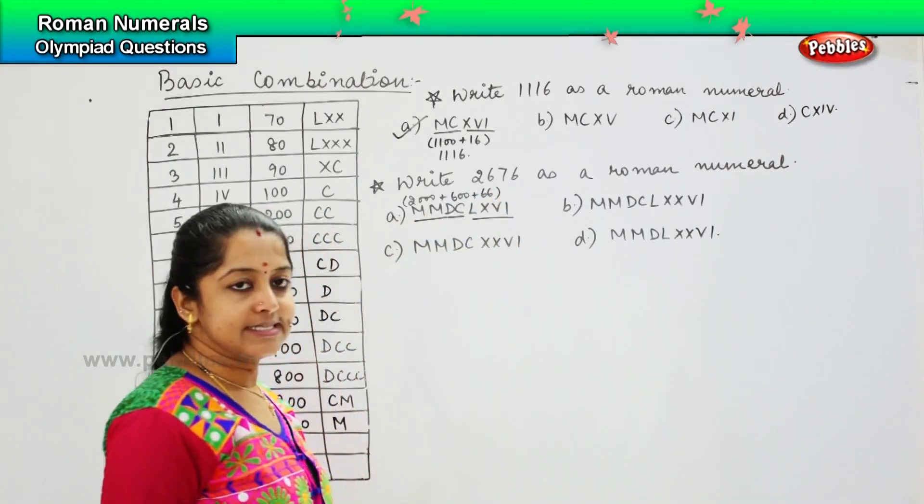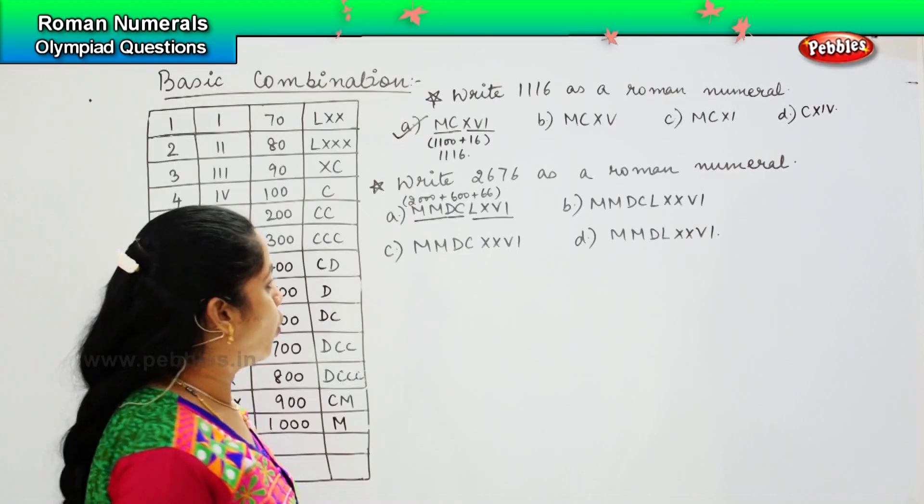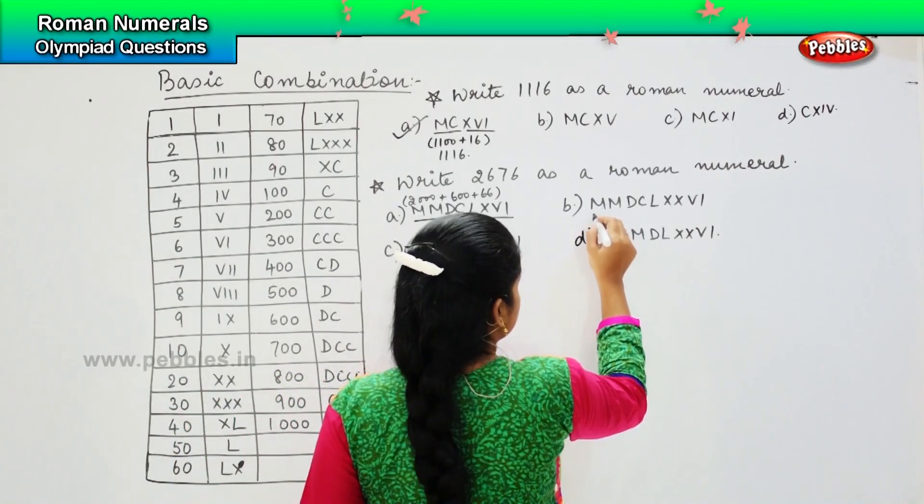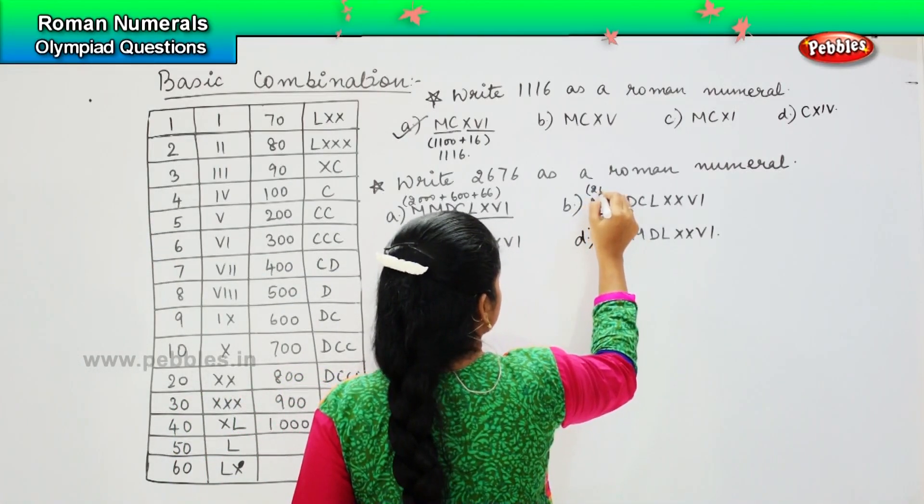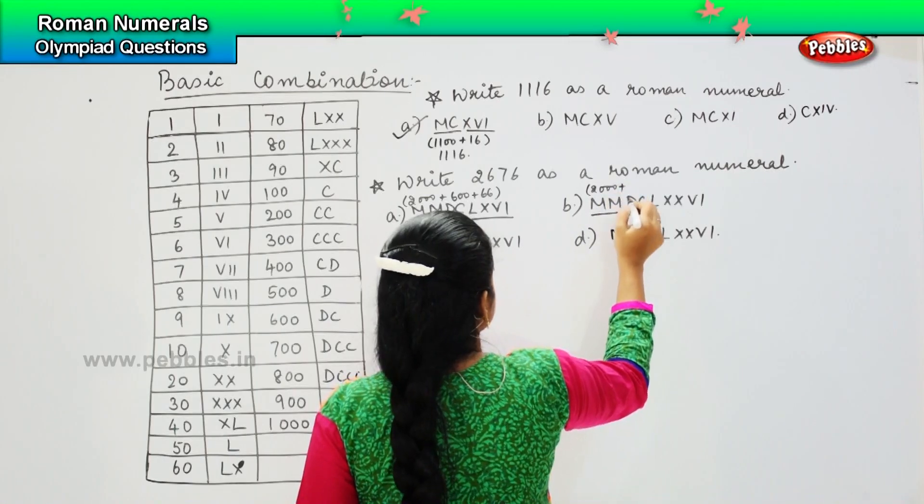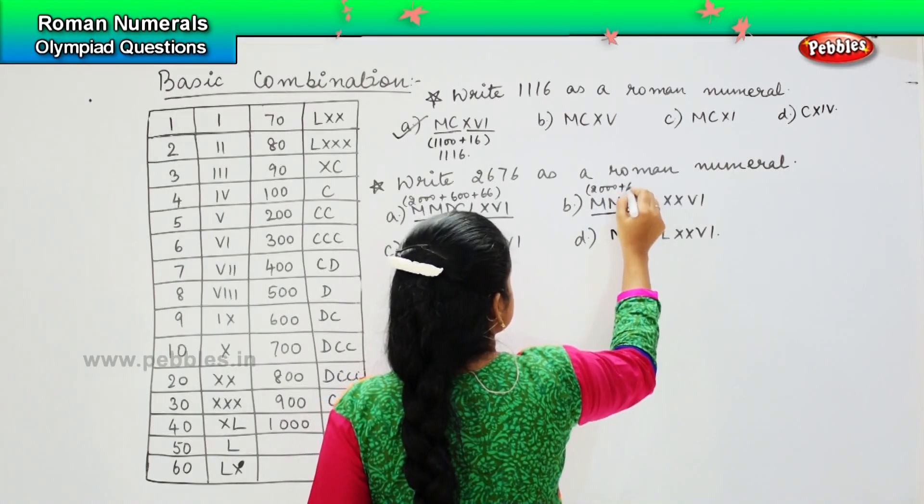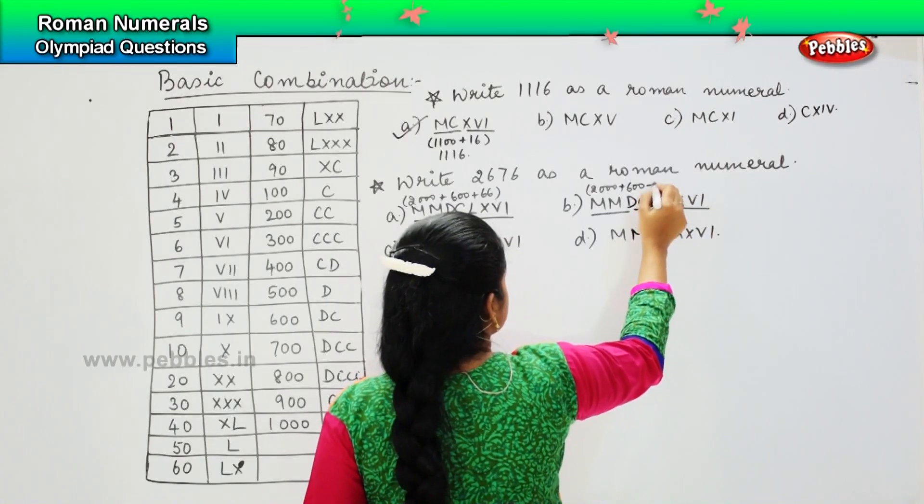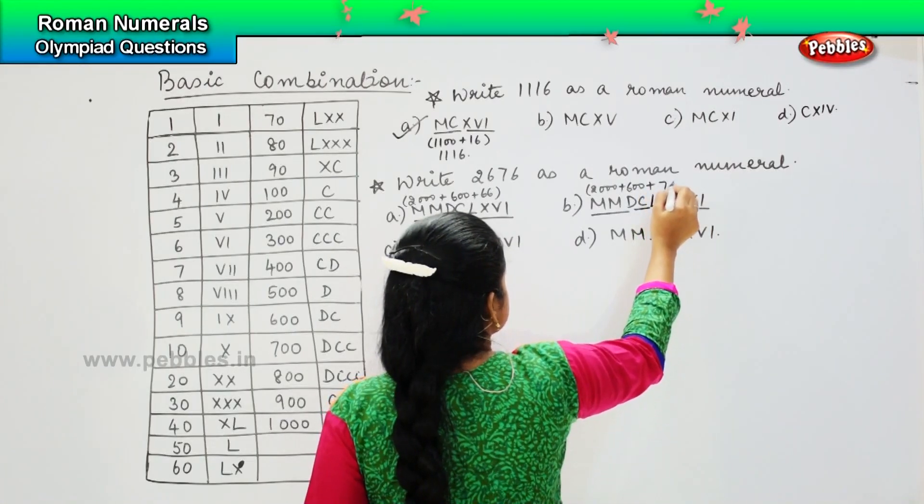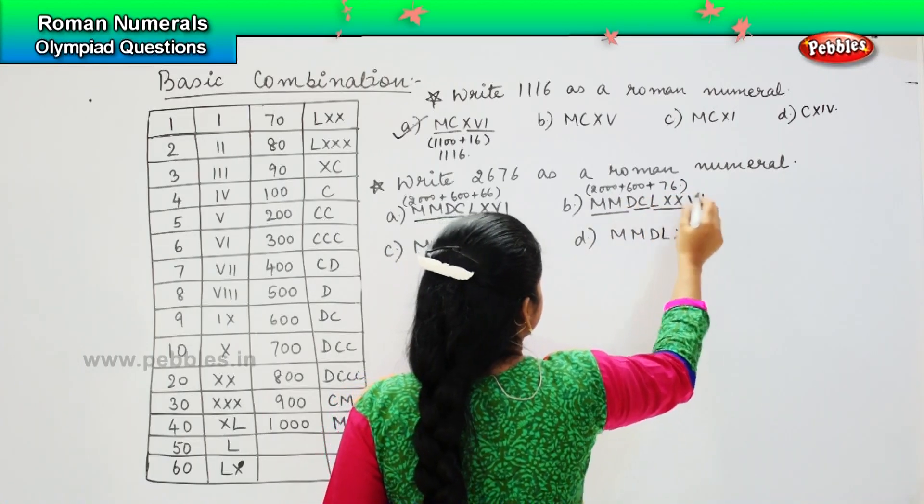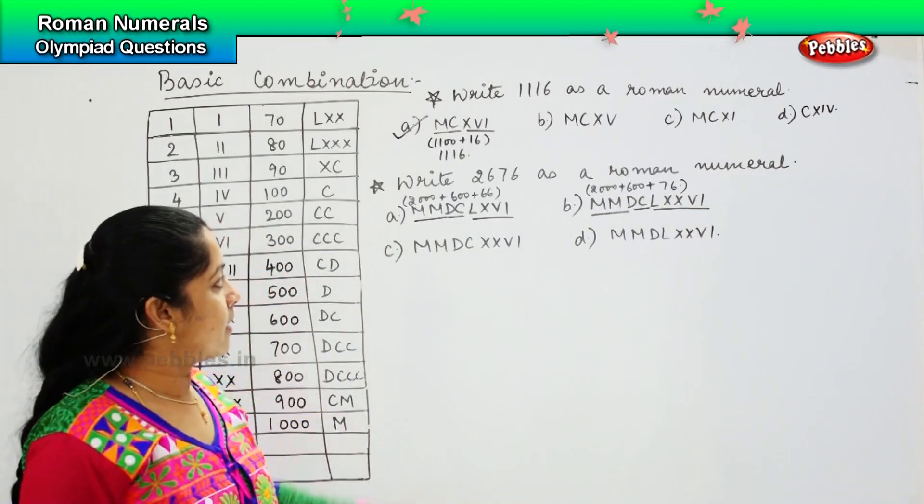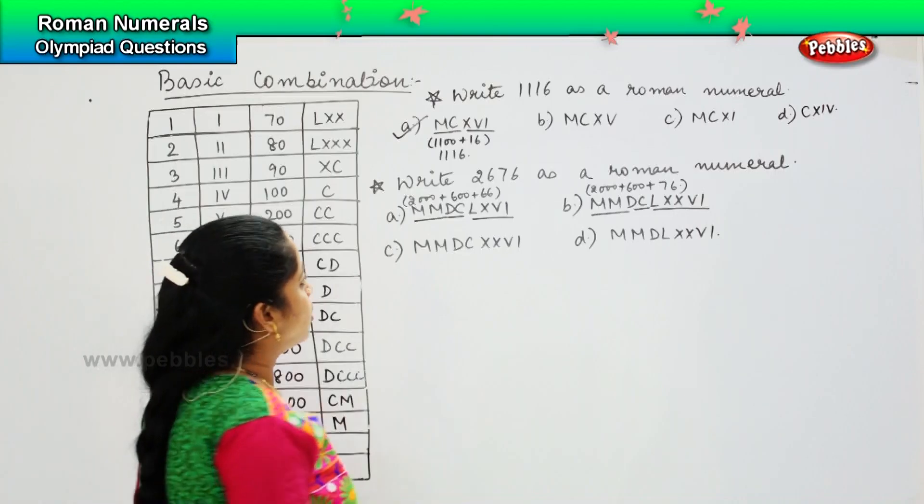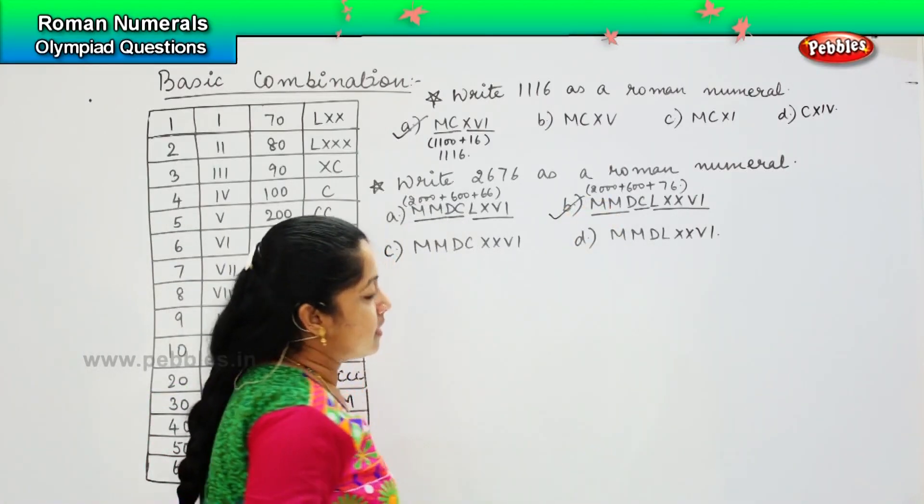Is this the right answer? No. Coming to the next one - so 2676. Is it what they are asking? 2676, yes. So option B is the right one. Clear?